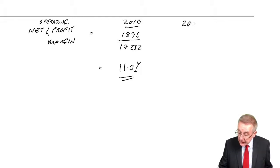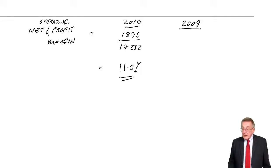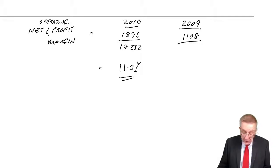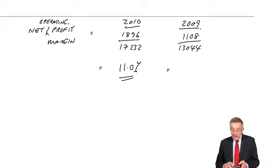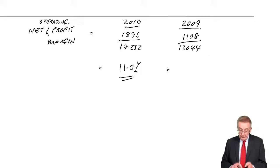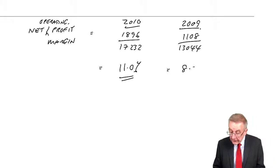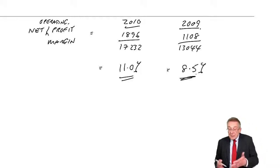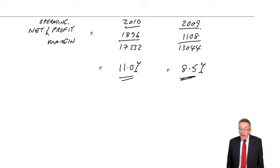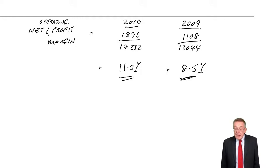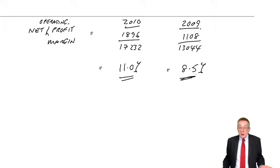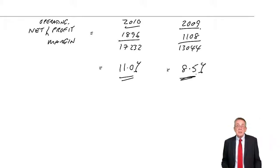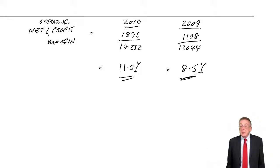What was it in 2009? The profit before interest and tax was 1108, but the revenue was lower at 13,044. In percentage terms: 8.5%. So that's good — we're making a bigger profit margin. It's not good just saying profit's gone up; if sales have gone up, you want profit to go up, but we are making a bigger percentage. It could be we're charging a higher price, or it could be because we've managed to cut costs. But 11% on its own means nothing — it's only by comparing with similar companies or with last year.